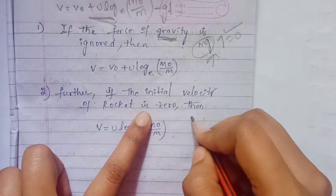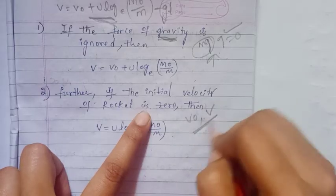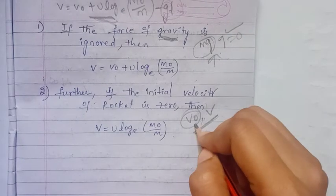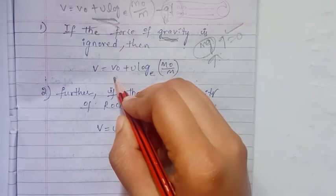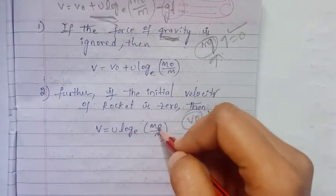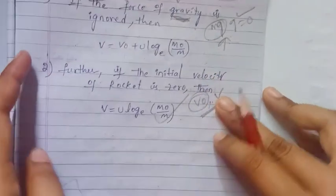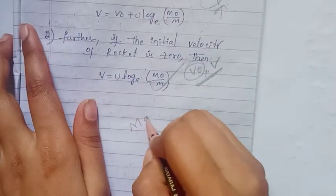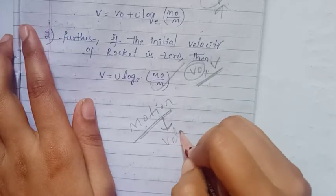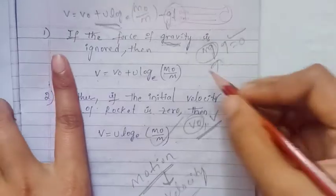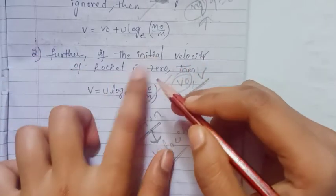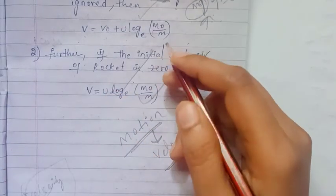If the initial velocity of the rocket is zero, then V0 equals 0, and the velocity expression simplifies to V equals u times log e of (M0 by M) minus gT. If gravity is also zero, the velocity reduces to V equals u times log e of (M0 by M).